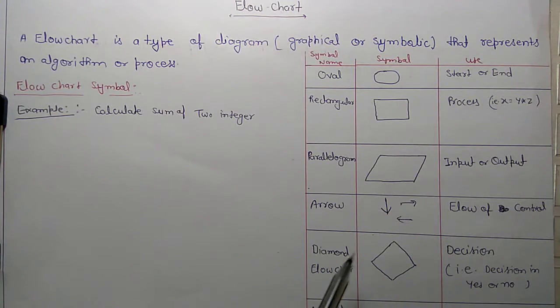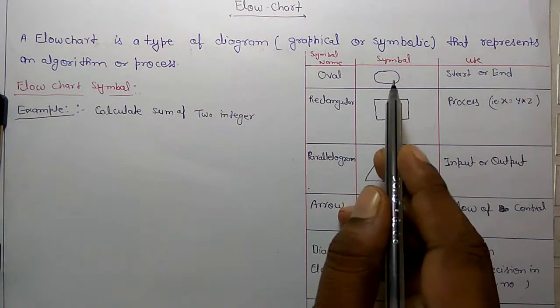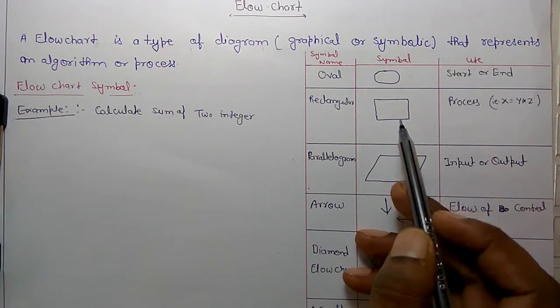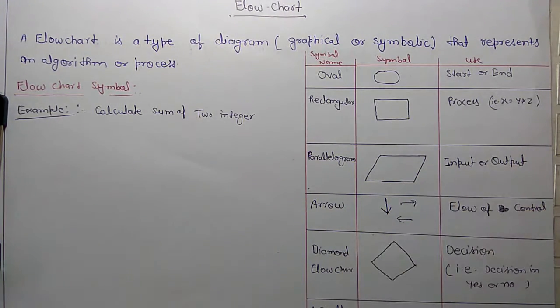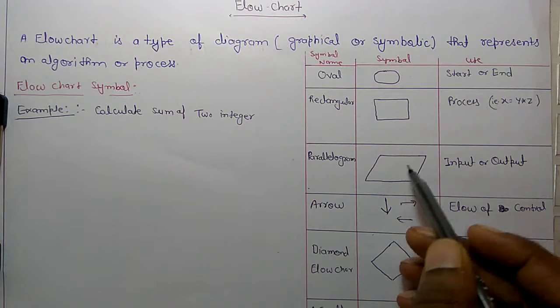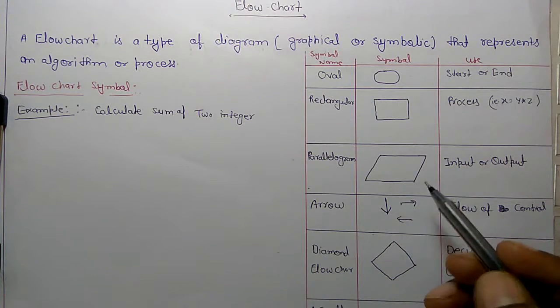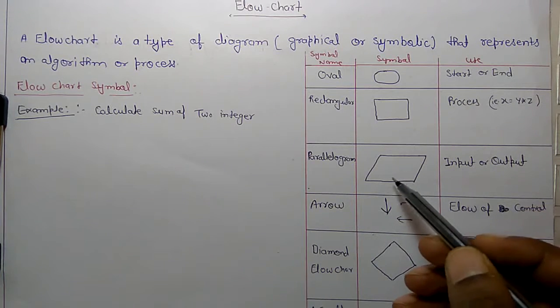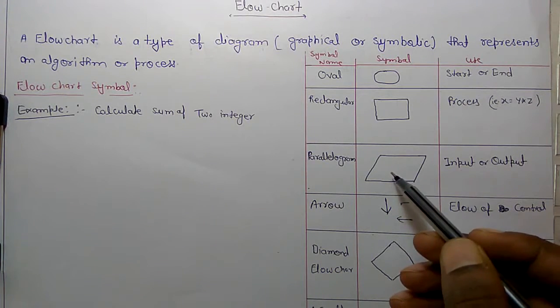The symbols used in flowchart are oval for start and end, rectangle for the process, and parallelogram for input and output. Input output means if you want to read input like scanf or perform printf, you can perform in parallelogram in flowchart.